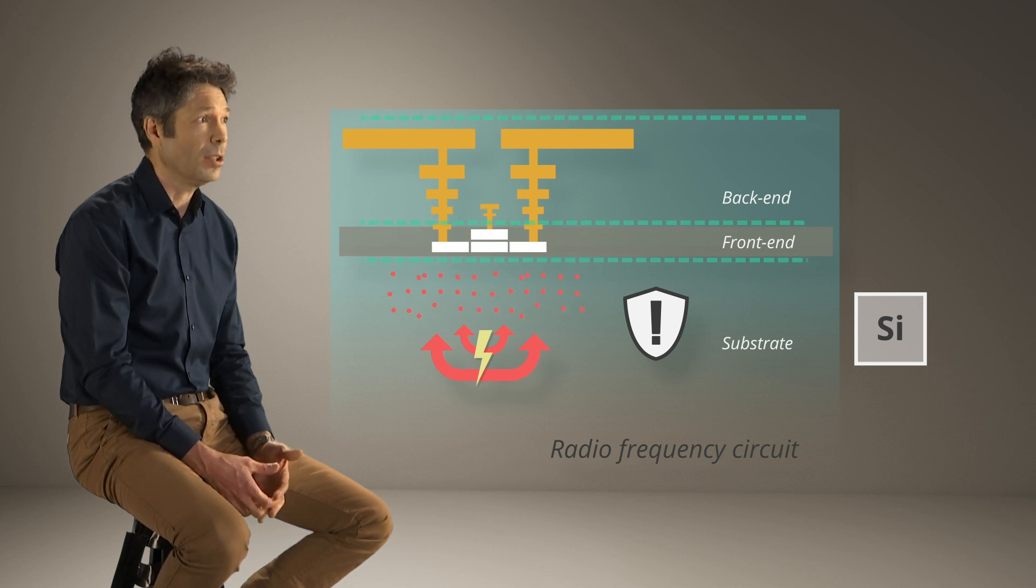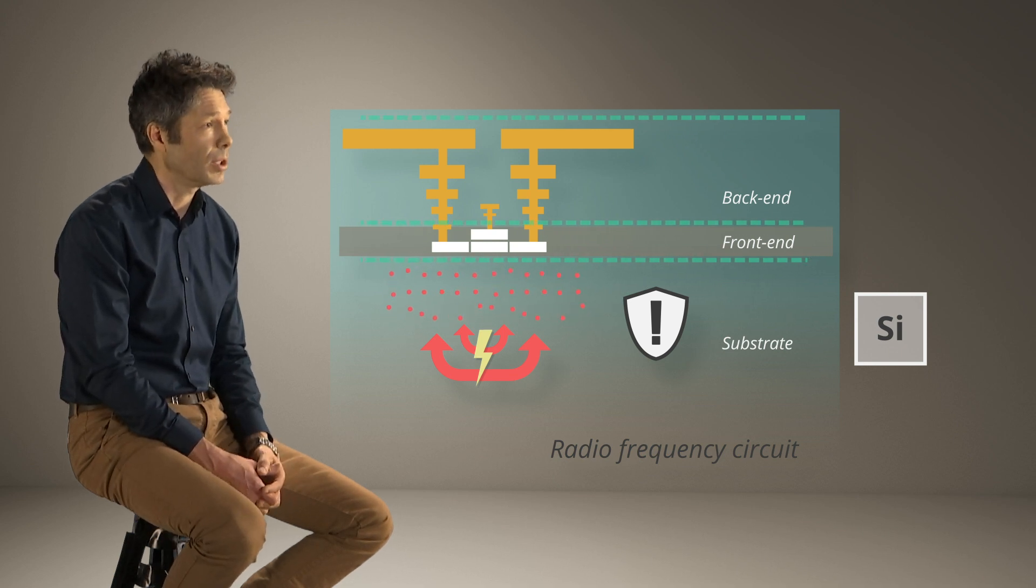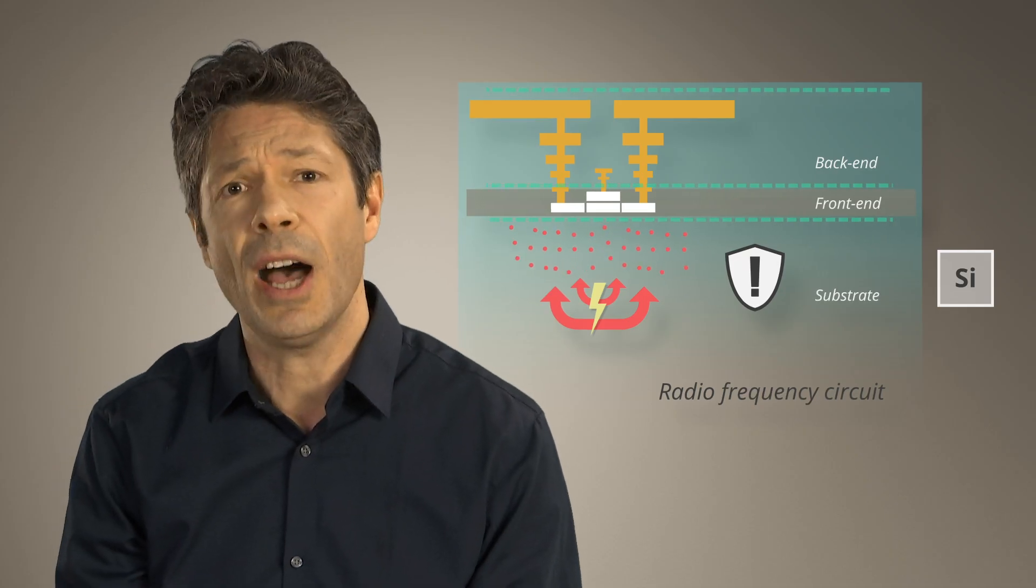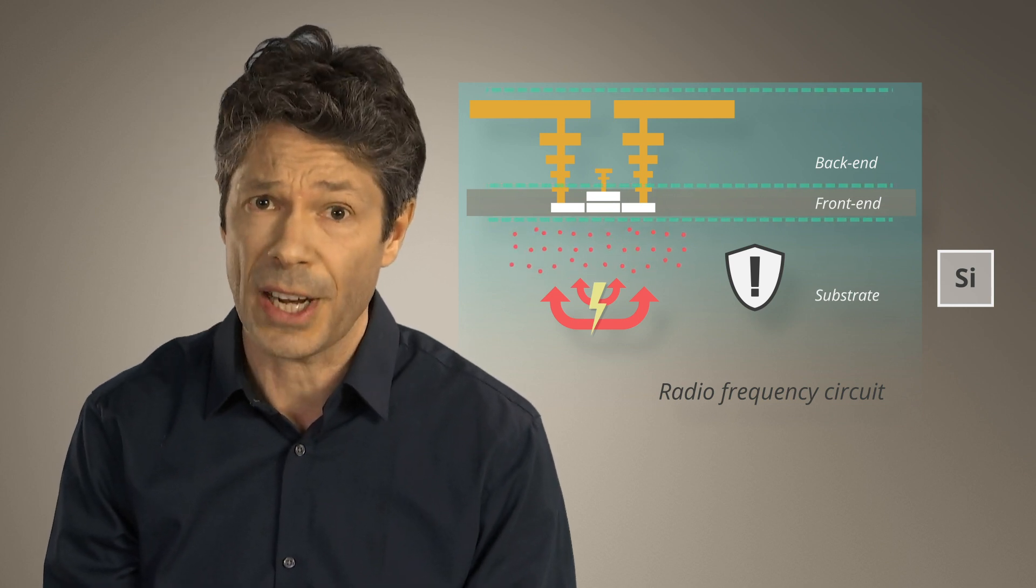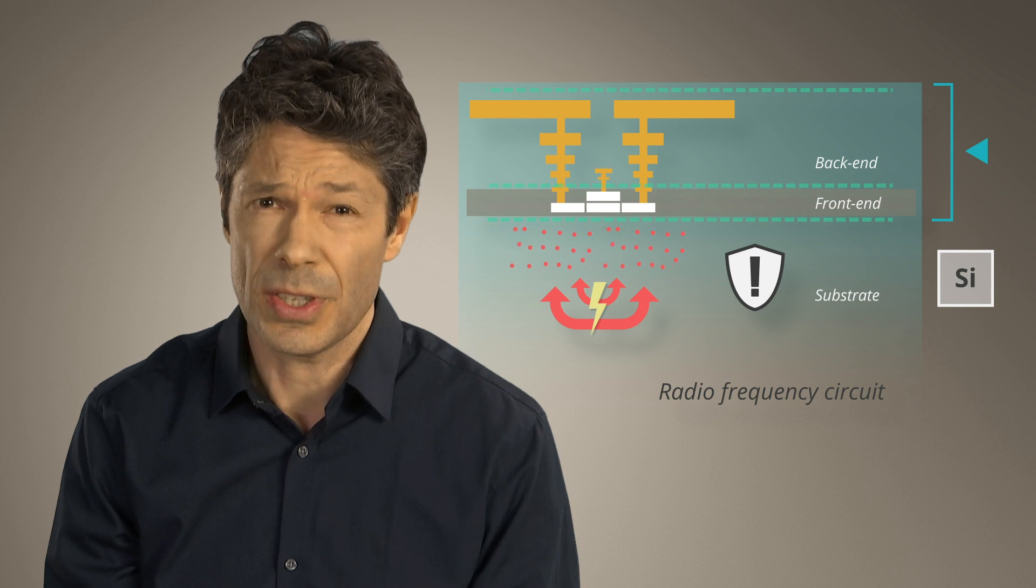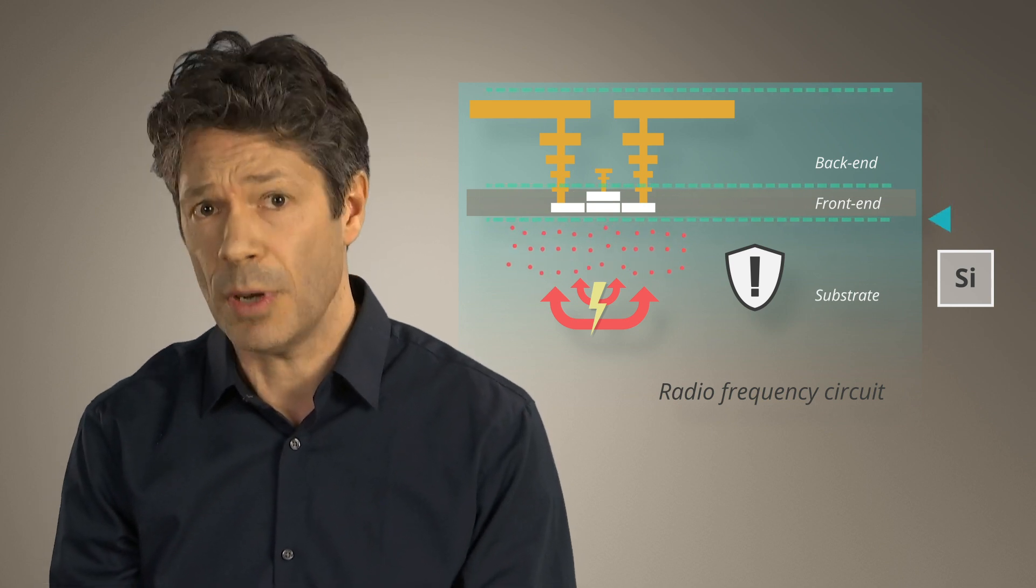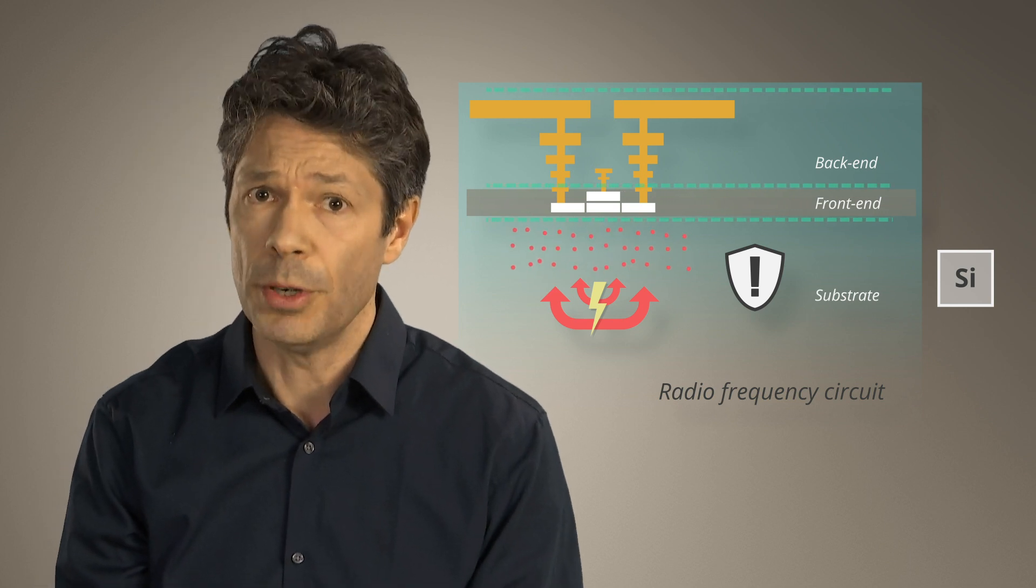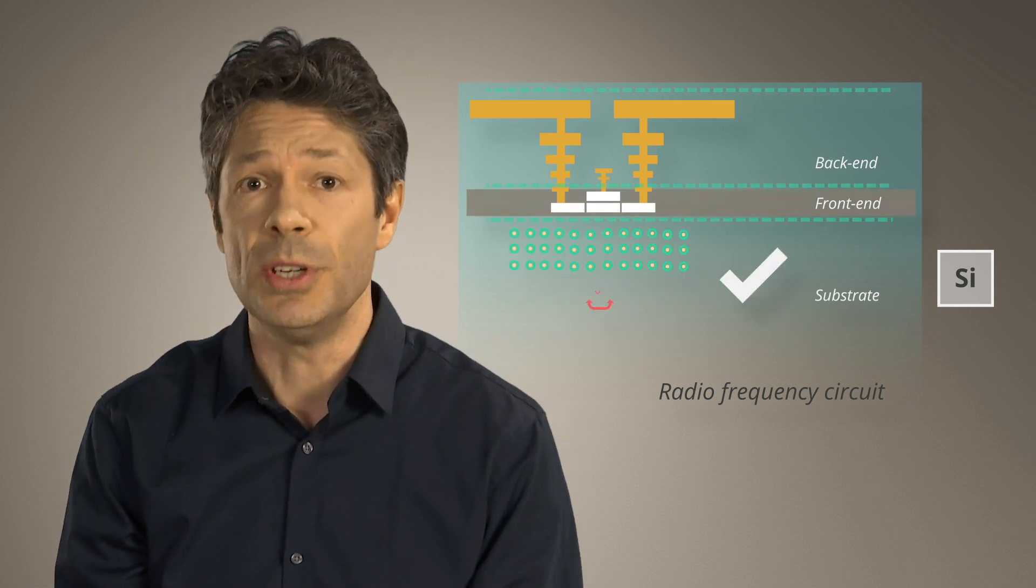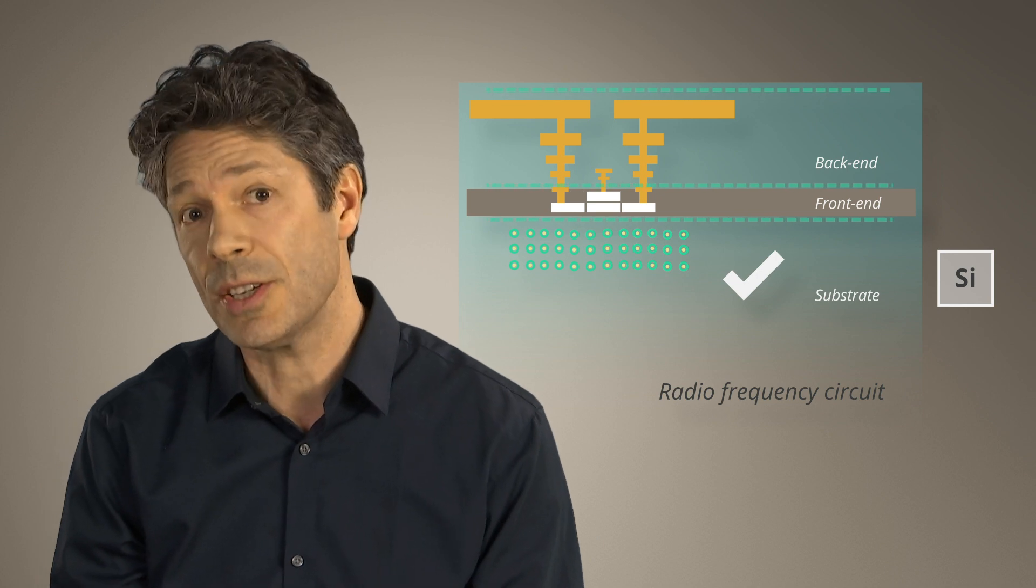That is really the bottleneck on which we have been working. Of course we need to have high quality semiconductor and very good interfaces without defects for the transistors. But for the interface between the transistors and the substrate, the story is totally different. We proved that traps can really reduce drastically insertion losses and can improve the quality factor of passives.